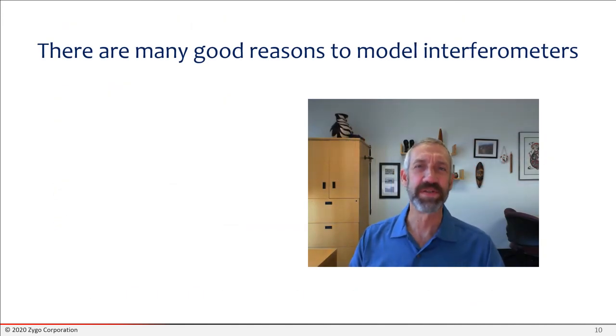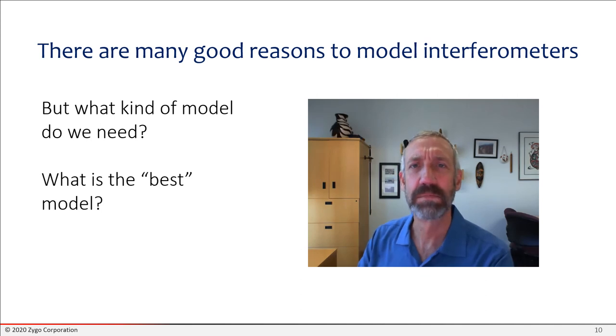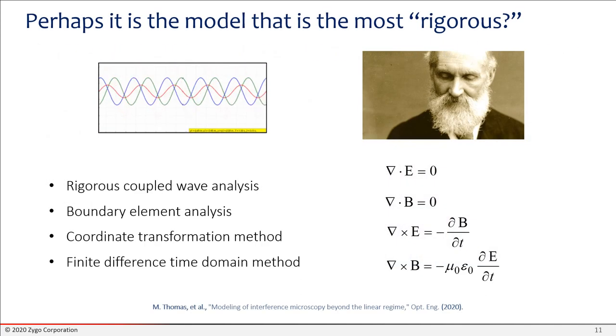So clearly there are a lot of good reasons to model interferometers. But the next question is, what kind of interferometer model do we need? What's the best model? Perhaps the best model is the one that's the most rigorous. And those of us that are trained in physics, we immediately gravitate towards this as the best model because it has lots of fun problems to solve. You could use rigorous coupled wave analysis, boundary element analysis, a number of different techniques, and you can write all kinds of MATLAB code. And there are times when you have to do this in order to get a meaningful answer.